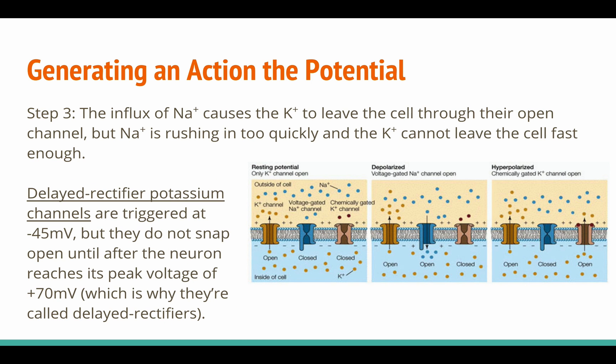Next, the influx of sodium ions causes potassium ions to leave the cell through their open channel, but sodium is rushing in too quickly and potassium ions cannot leave fast enough. Delayed rectifier potassium channels are triggered at negative 45 millivolts, but they do not snap open until after the neuron has reached its peak voltage of positive 70 millivolts, which is why they are called delayed rectifiers.